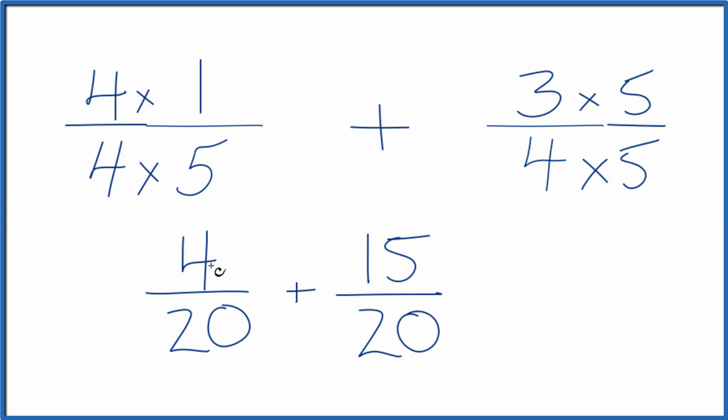So now we have the same denominators. We just add the numerators. Four plus 15, that equals 19. Bring the 20 across since we're adding fractions. And one-fifth plus three-fourths equals 19 twentieths.